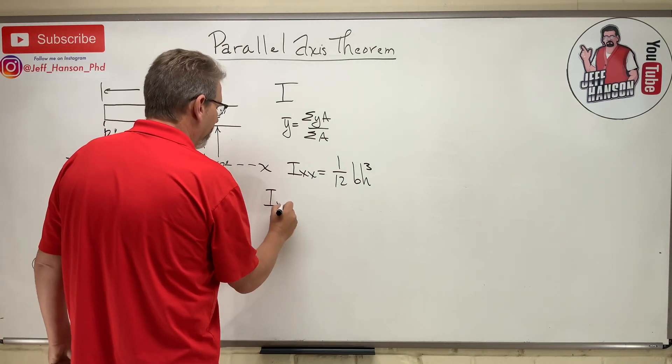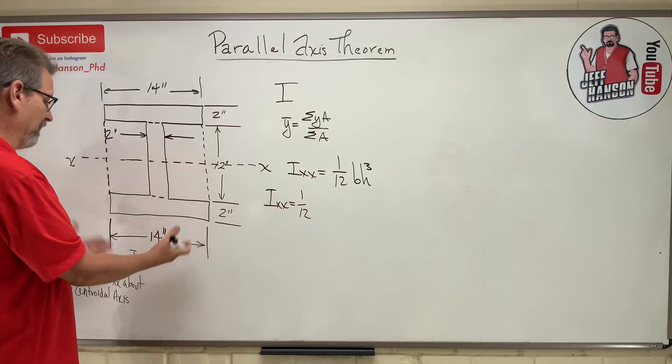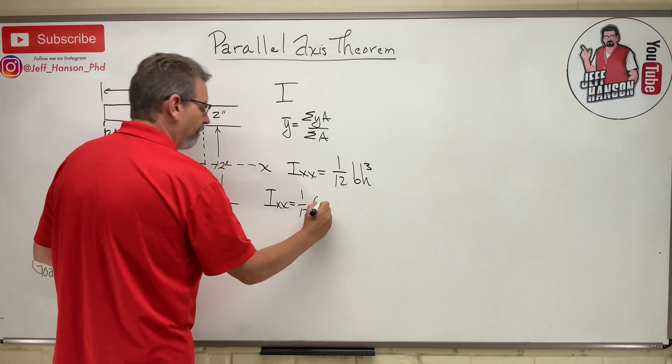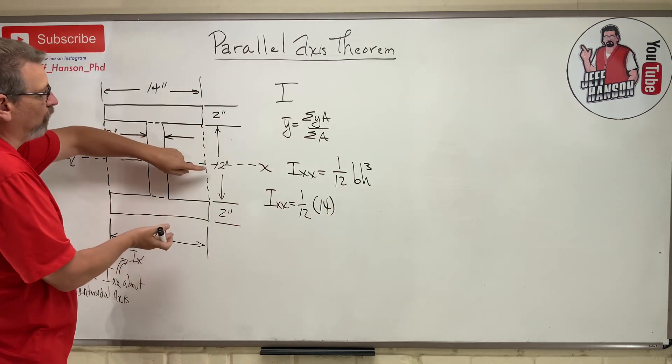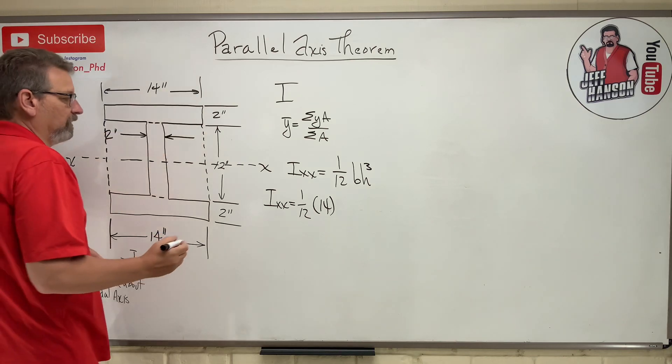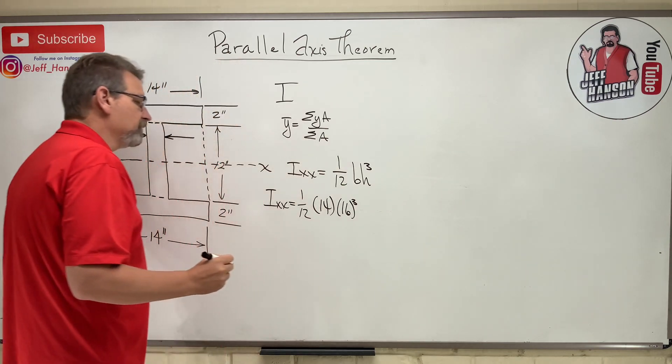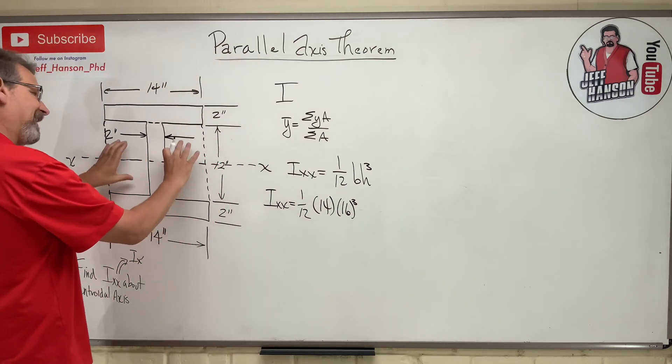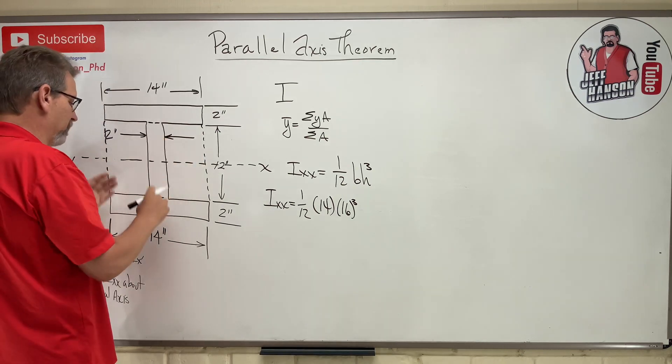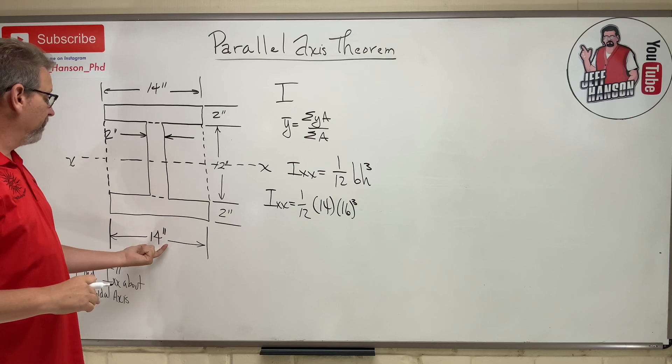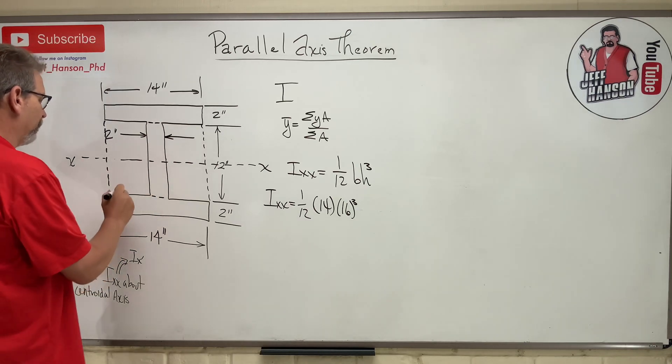So I_xx equals 1/12. What's the base of the big rectangle? It's 14. And what's the height of the big rectangle? It's 12 plus 2 plus 2 is 16 cubed. So there's the big rectangle. Now, I'm going to subtract off these two guys here. I could combine those into one big rectangle, couldn't I, subtract that off. Since this is 14, then minus 2 is 12. So these guys are 6 and 6.